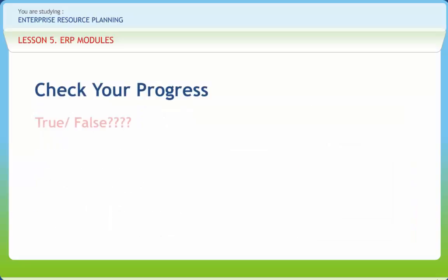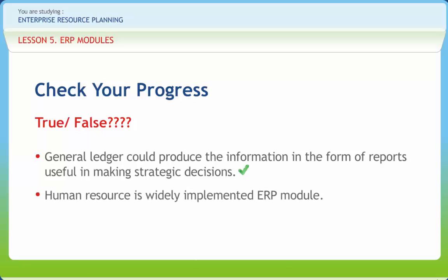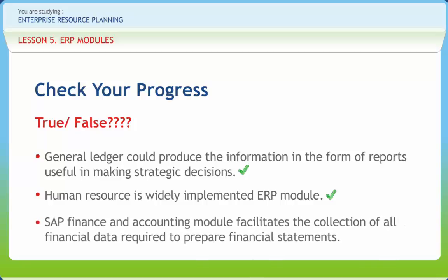Now let us check if we have understood the various concepts discussed in this lesson. General ledger could produce information in the form of reports useful in making strategic decisions — Right. Human resource is a widely implemented ERP module — Right. SAP Finance and Accounting module facilitates the collection of all financial data required to prepare financial statements — Right.